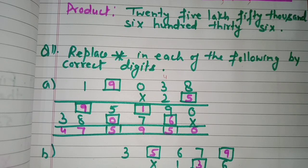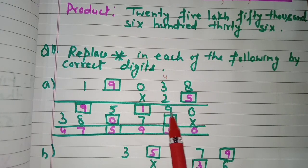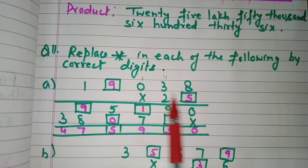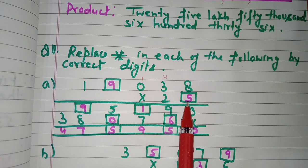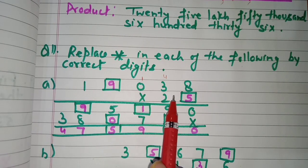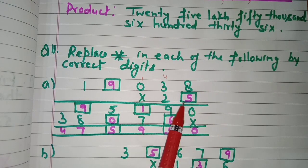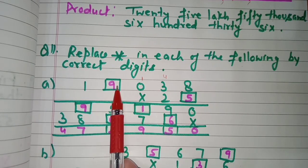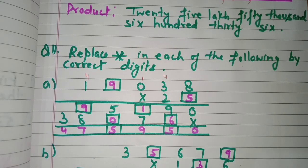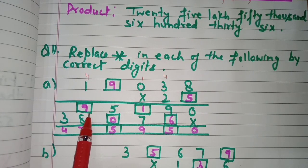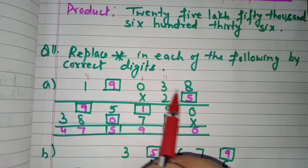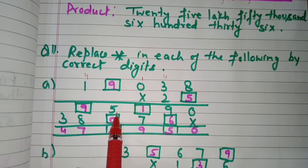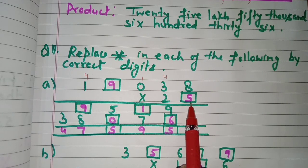We need two digits such that when multiplied by five we get five in the ones place. Five nines are 45 — write five, carry four. Five ones are five plus four is nine. So the missing digit is nine, because only nine multiplied by five gives 45 allowing us to write five. We are done with the ones place.